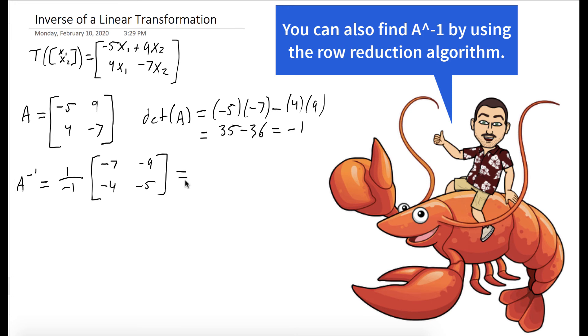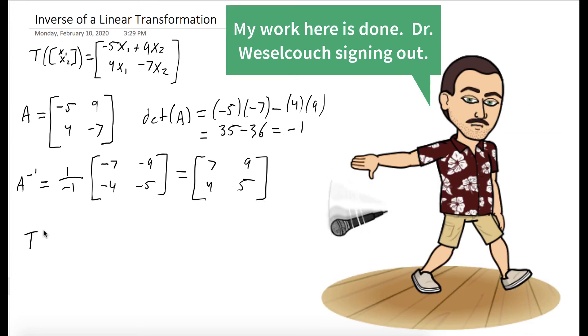We could factor the negative 1 in, and we get 7, 9, 4, 5. And we can conclude that T inverse sends x1, x2 to 7x1 plus 9x2, 4x1 plus 5x2.